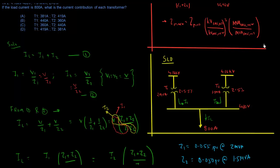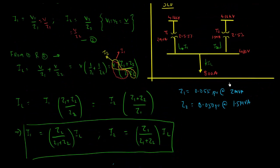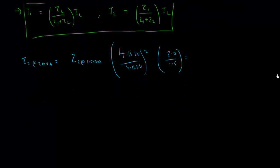Converting Z2 to the 2 MVA base: Z2' = 0.05 × (2/1.5). Plugging this into the calculator gives Z2' = 0.067 per unit. Now we can use this converted value — call it Z2 prime — in our formula, substituting it in place of the original Z2.